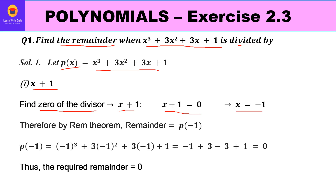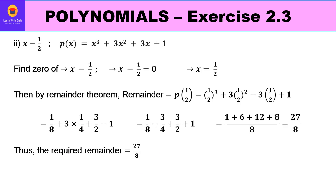So x + 1 = 0 gives x = −1. The Remainder Theorem says the remainder equals the value of the polynomial at x = −1. Replacing x by −1: (−1)³ + 3(−1)² + 3(−1) + 1 = −1 + 3 − 3 + 1. Here −1 + 1 cancels, and 3 − 3 cancels, leaving 0. So the required remainder is 0.